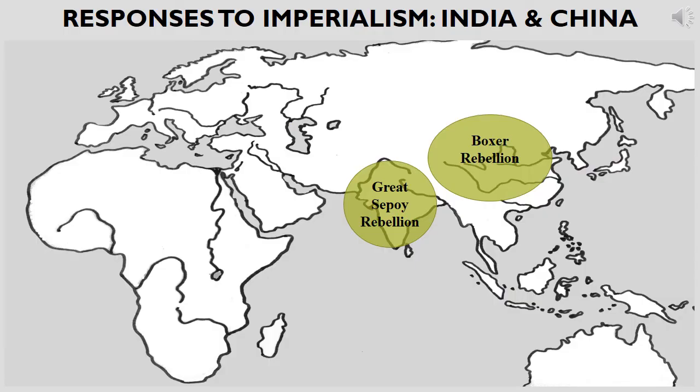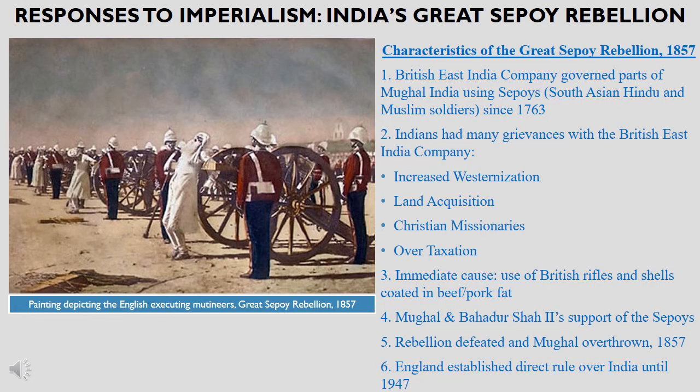The increased economic, cultural, and military presence of imperialistic states also rendered responses of direct resistance, as in the case of the Great Sepoy Rebellion of 1857 in British India and the Boxer Rebellion against foreigners in China. The Great Sepoy Rebellion of 1857 occurred in British India. The Mughal Empire had lost a lot of authority over the course of the 1700s due to both internal and external forces. Internally, the intolerant reign of Aurangzeb turned many Hindu states like the Maratha Empire in southern India against the Mughal. Externally, the continued arrival of the British East India Company posed a threat to Mughal authority and sovereignty.